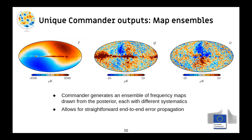One of the best things you can get from a Commander run is an actual ensemble of maps. For every Gibbs sample, you get a specific realization of a CMB map, allowing you to use one map at a time to fully propagate errors from this analysis into final results. This is essentially equivalent to projecting out noise matrices and poorly measured modes, but in a more physically transparent way, and it allows straight end-to-end error propagation.